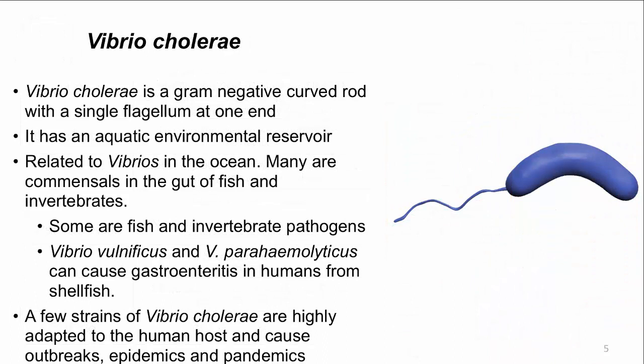Let's start with Vibrio cholerae. It causes cholera, and outbreaks are still a problem worldwide. Vibrio cholerae is a gram-negative curved rod with a single flagellum at one end, as shown in the image. Vibrio lives in water — oceans and estuaries are common sites, and many are commensals of fish and invertebrates. Some are pathogens; for example, Vibrio vulnificus and Vibrio parahaemolyticus can cause gastrointestinal disease from eating contaminated shellfish. Very few strains of Vibrio cholerae are highly adapted to humans, but when they are, they can cause outbreaks, epidemics, and even pandemics. An outbreak occurred in Haiti in 2010 after their devastating earthquake; the last pandemic was around 50 years ago.